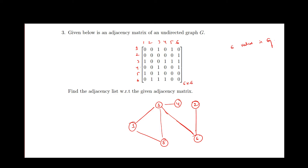In the fourth row, vertex 4 is adjacent to vertex 3 and vertex 6. We have already drawn an edge between 3 and 4, and vertex 4 is also adjacent to vertex 6. In the fifth row, vertex 5 is adjacent to vertex 1 and vertex 3. And vertex 6 is adjacent to vertex 2, vertex 3, and vertex 4.